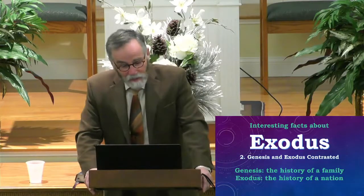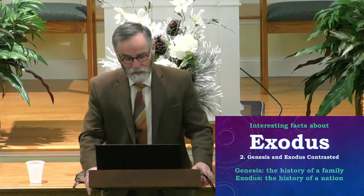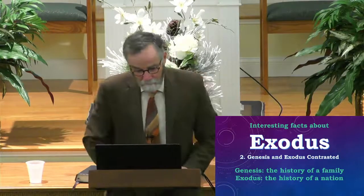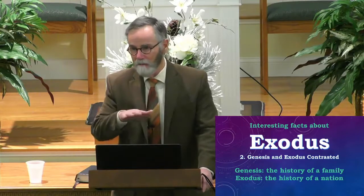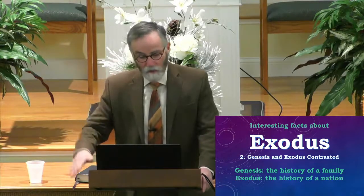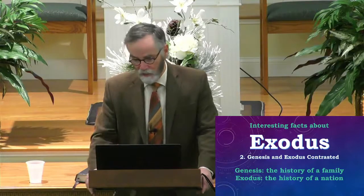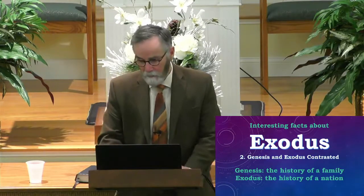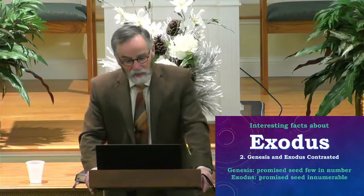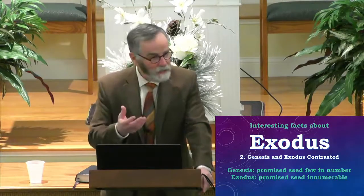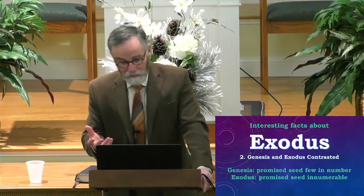An interesting contrast exists between the book of Genesis and Exodus. The book of Genesis is really the beginning of the history of the family — Abraham, Isaac, and Jacob — and it ends with Joseph. Genesis is the history of the family, but Exodus marks the beginning of the history of a nation. That seed, that line, developed into the nation of Israel. Also, in Genesis we have the promised seed — just a handful, about 70 at the end. In Exodus, that promised seed became innumerable.